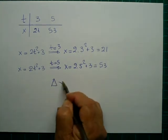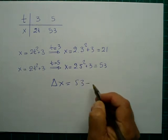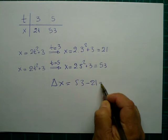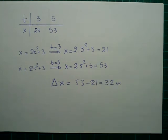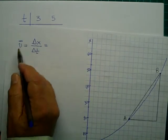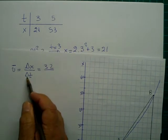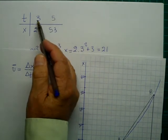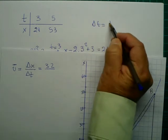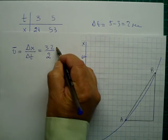Then we must calculate the average velocity. The average velocity is Δx, which is 32, divided by Δt, which equals 5 minus 3, giving 2 seconds.